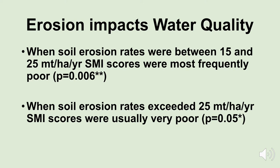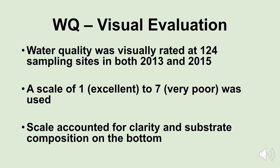We also visually evaluated water quality. Water quality was visually rated at the 124 sampling sites in both 2013 and 2015 using a scale of 1 to 7 — 1 being excellent water quality, 7 being very poor water quality. Our scale accounted for clarity — how clear the water was — and the substrate composition on the bottom of the stream. Remember, substrate composition is related to fish spawning and habitat. We want cobbles on the bottom of the stream, not sand — cobbles provide good habitat.